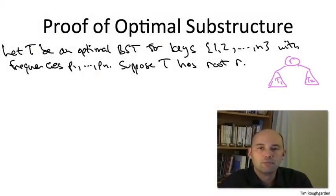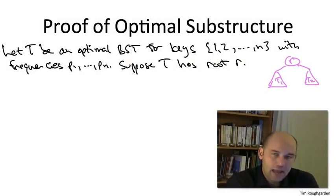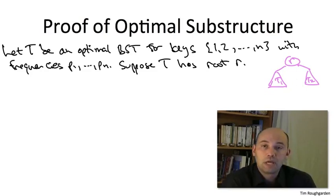So let's take any optimal binary search tree for keys 1 through n with frequencies p1 through pn. The thing we're trying to prove asserts that the left subtree T1 should be optimal for its keys, 1 through r minus 1, and the right subtree T2 should be optimal for its keys, r plus 1 through n.